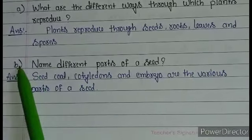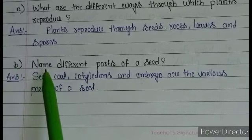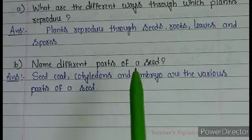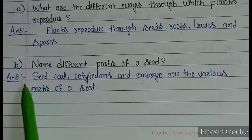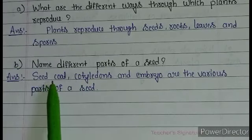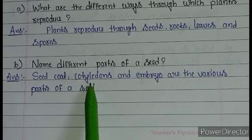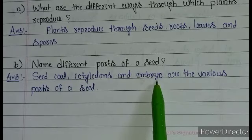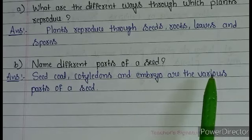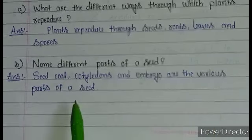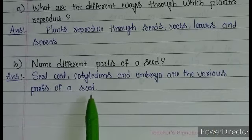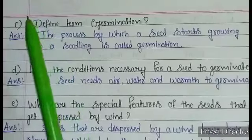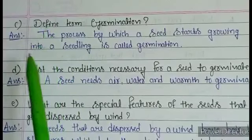Question B: name the different parts of a seed. Answer: seed coat, cotyledons, and embryo are the various parts of a seed.